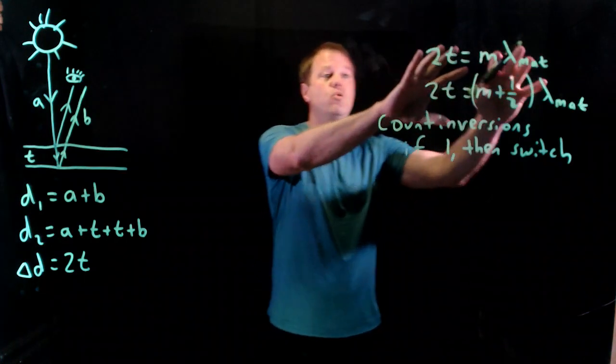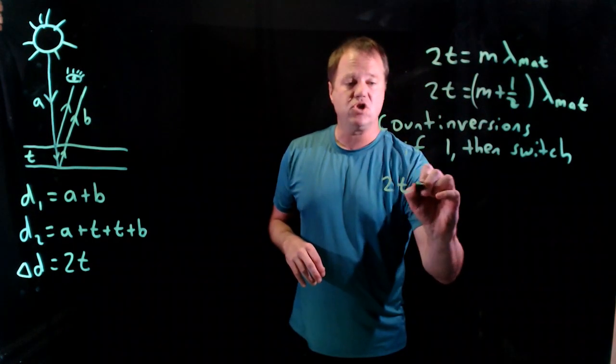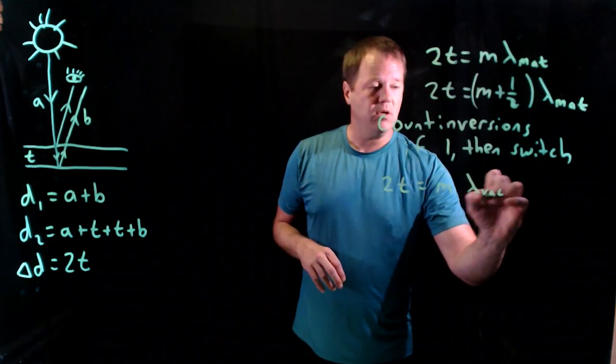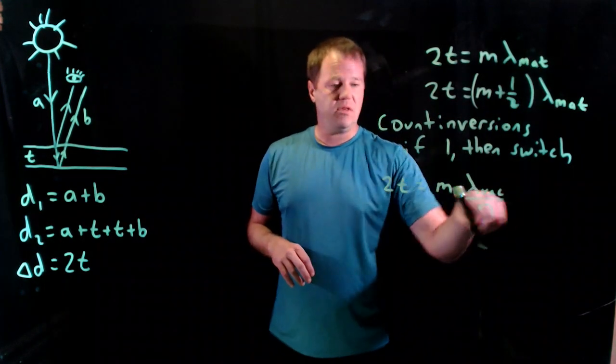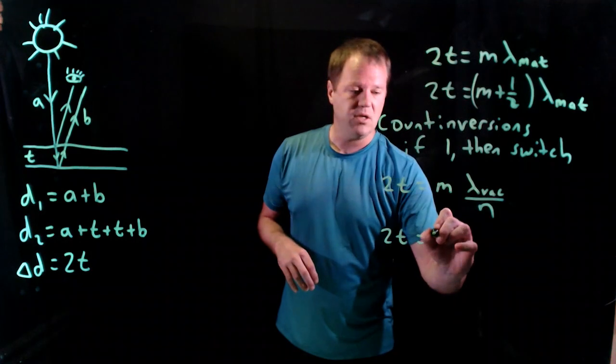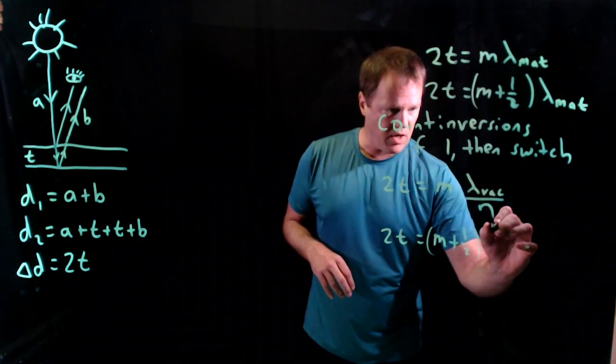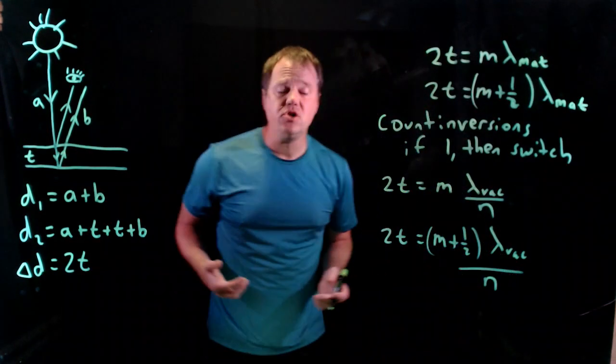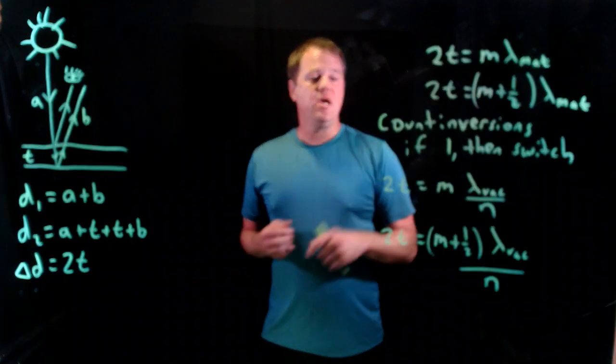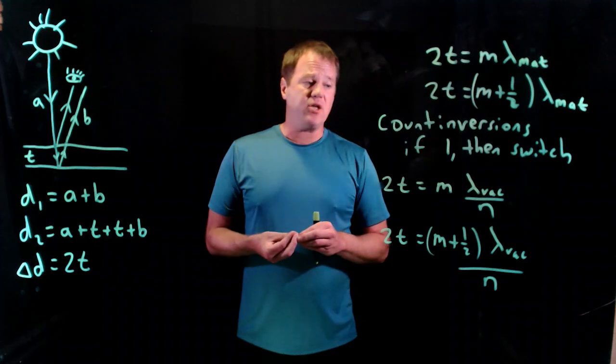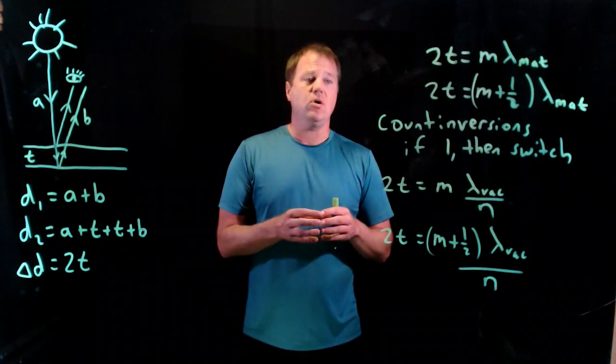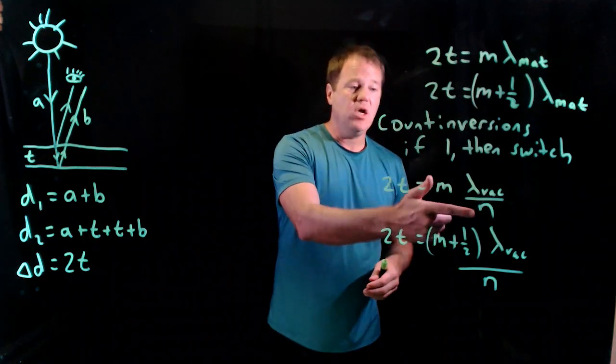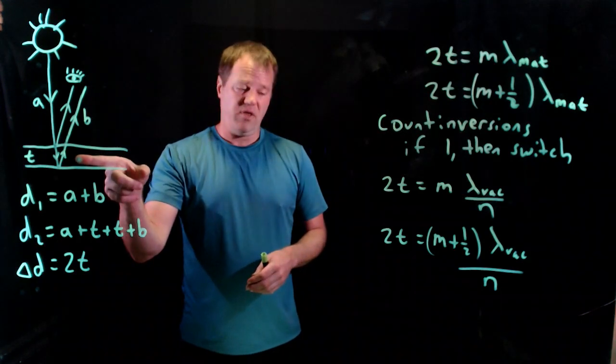So M times wavelength in vacuum over N. So I'm just replacing this with this and then twice the thickness will be M plus one half times wavelength in vacuum divided by N. So these are the two equations that you use again, being careful to count inversions. So the indices of refraction come into play twice, both once when you're counting the inversions and then the second time when you're using this formula that N is the index of refraction for the thin film.